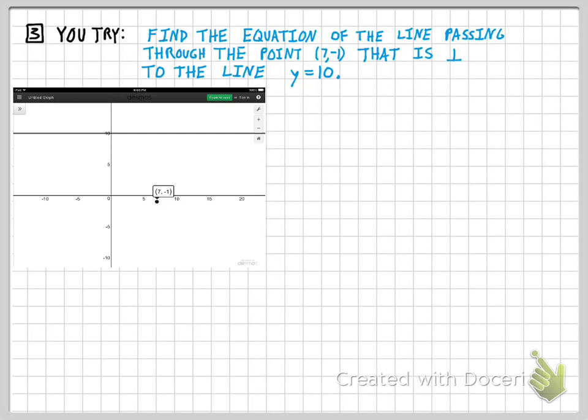All right, box 3 is a you-try. Find the equation of a line passing through the point 7, negative 1 that is perpendicular to the line y equals 10. All right, the answer is x equals 7.